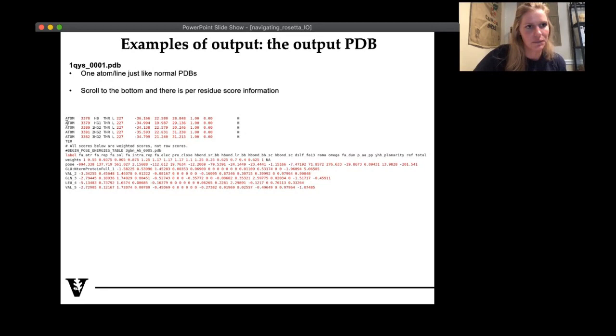So we also output a PDB. And the default nomenclature is the PDB name underscore 0001.PDB. So again, this is just like a normal PDB, where you have one atom per line, you have the coordinates. As you can see here, this is a little snippet from an output PDB with each atom on its own line. If you scroll to the bottom of the Rosetta output PDB, you also get some nice information about per residue energies. So again, this kind of looks like the output of that score file. You see this fa_atr, that full atom attractive term that I just brought up. And you get for each residue the individual scores. And this is really nice for trying to pinpoint where in a structure you might be seeing, you know, fa_rep. If there's a large fa_rep, where does that actually come from? This is really nice for that.